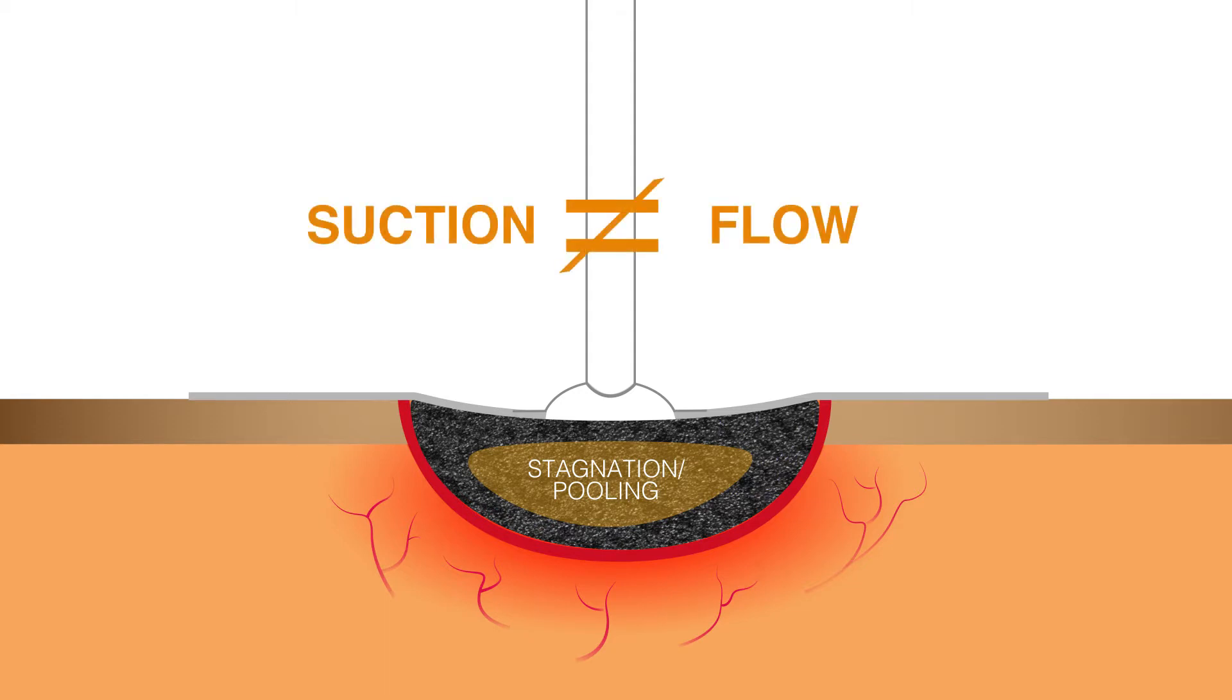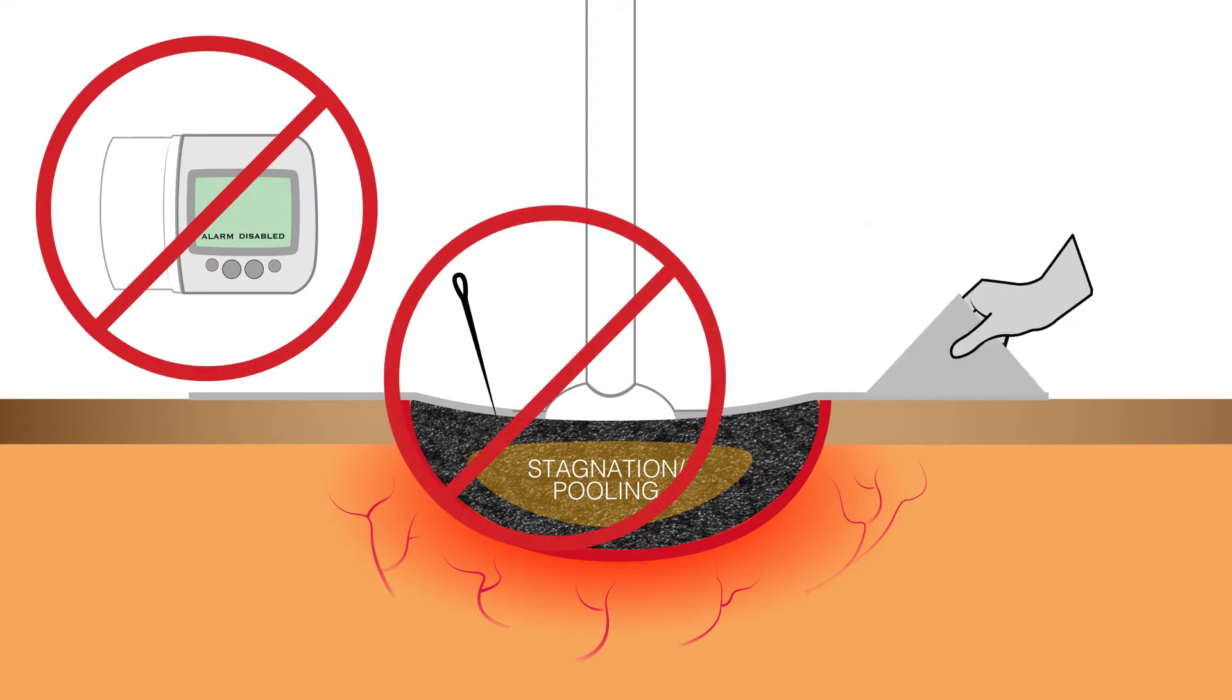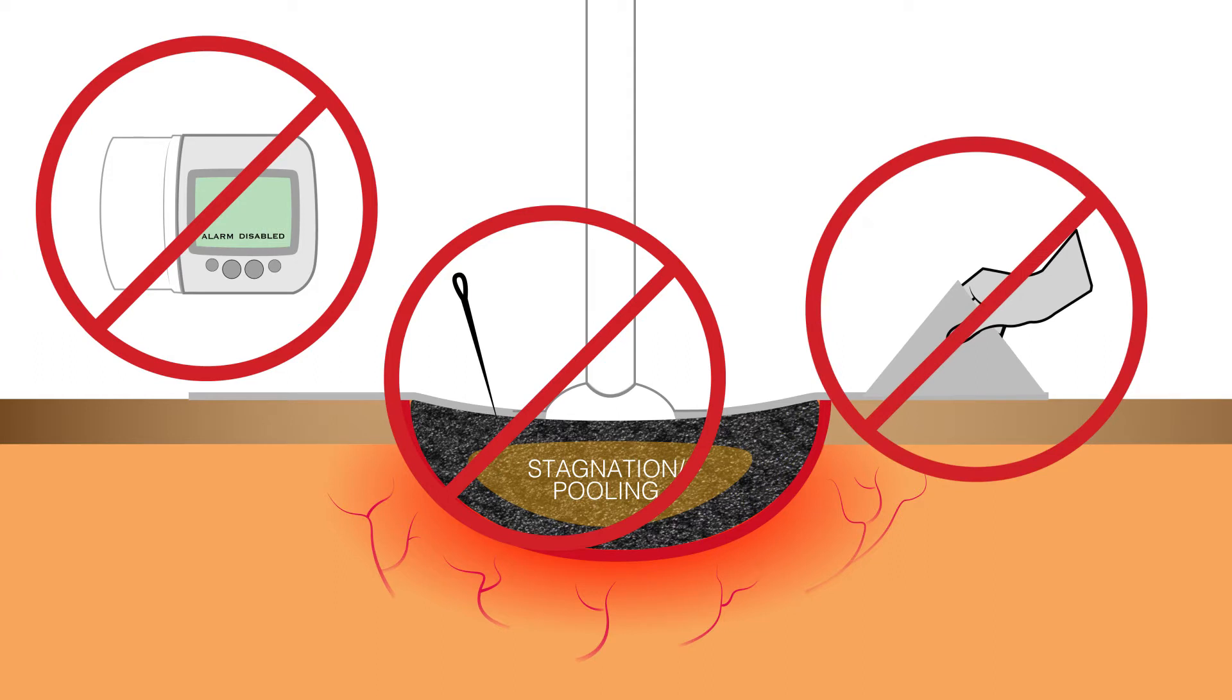The simple fact is suction does not equal flow. If you have ever disabled a blockage alarm, poked a needle hole in the dressing, or lifted the edge of a dressing, you have employed a workaround to promote flow in order to prevent stagnation. These actions compromise patient safety.